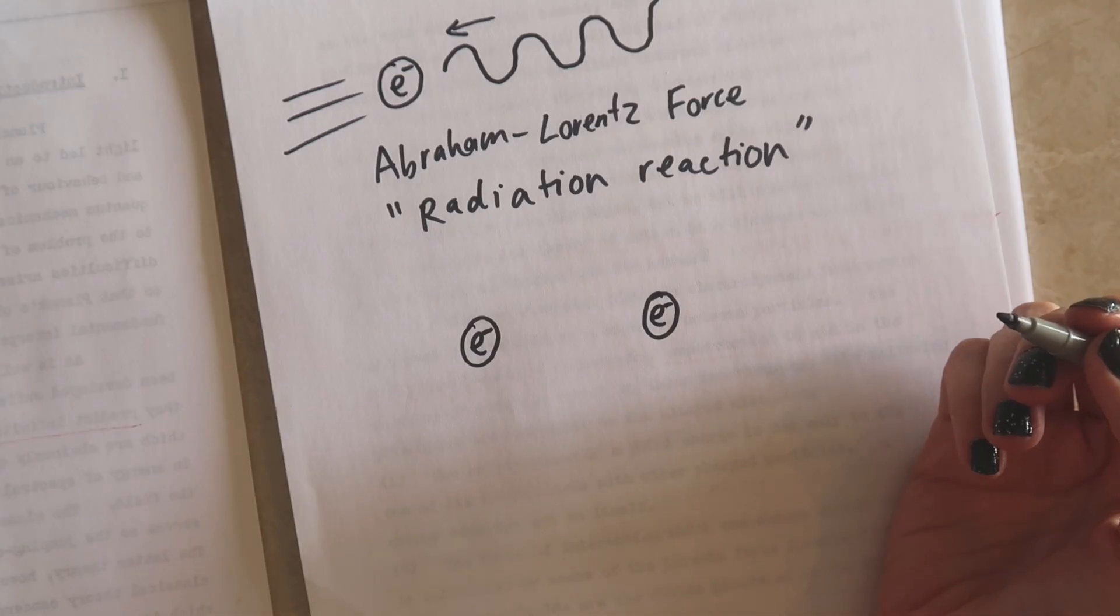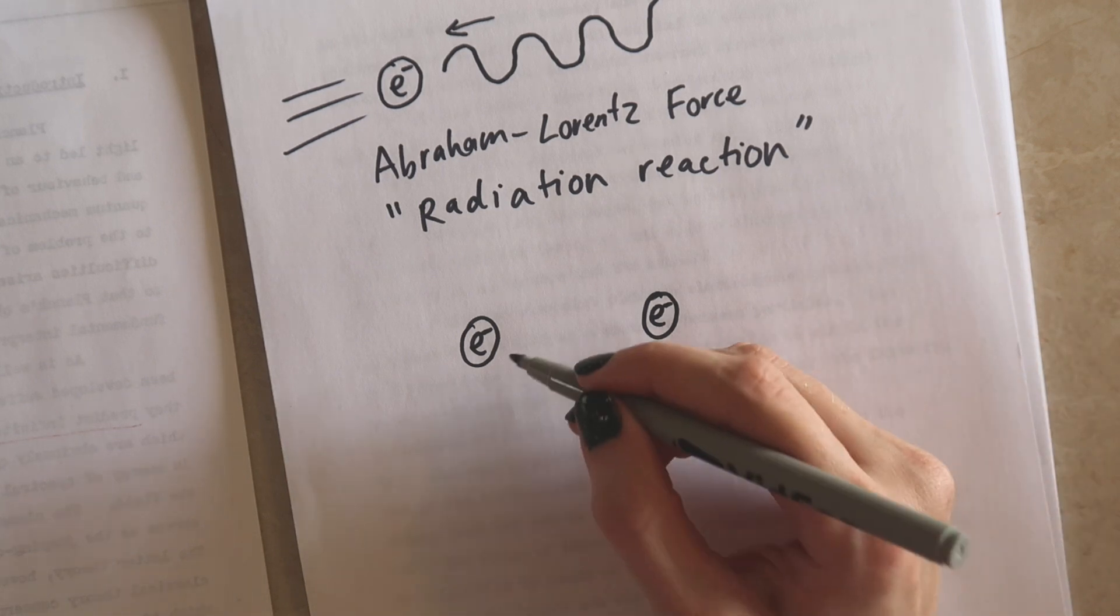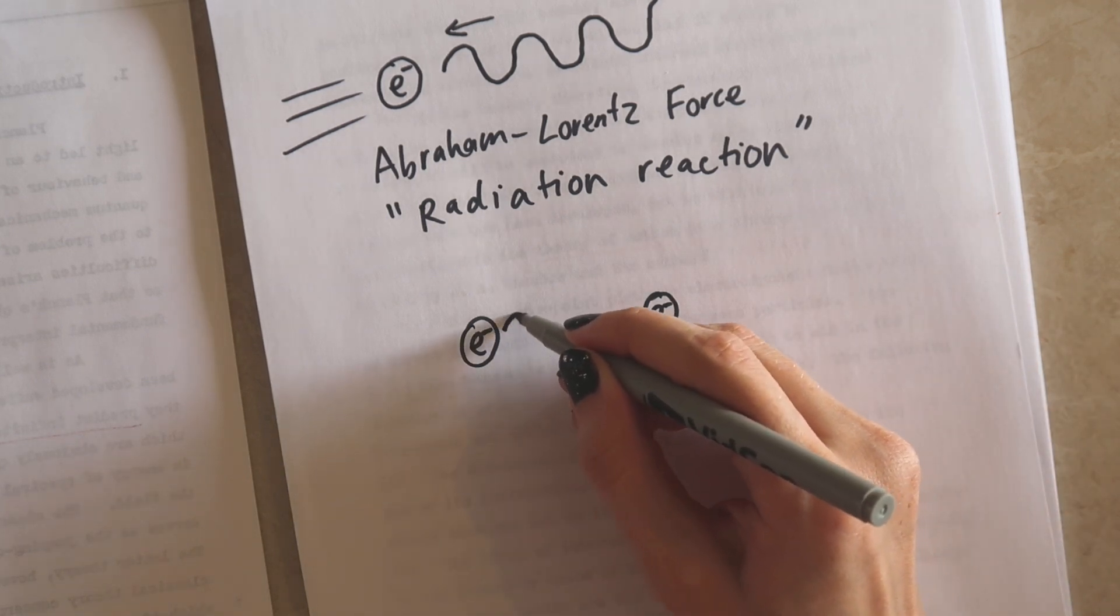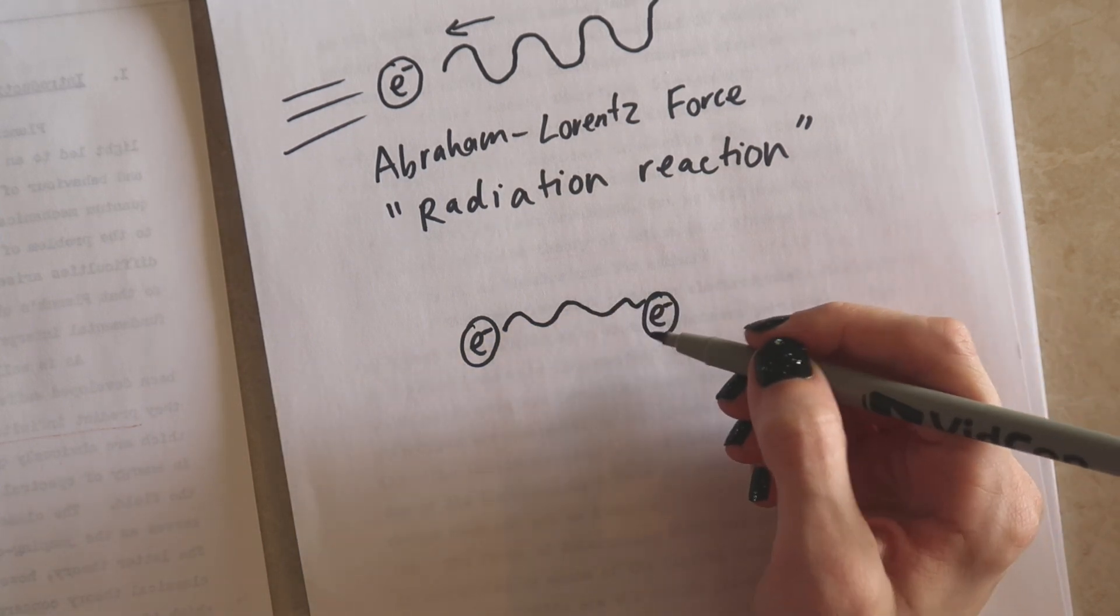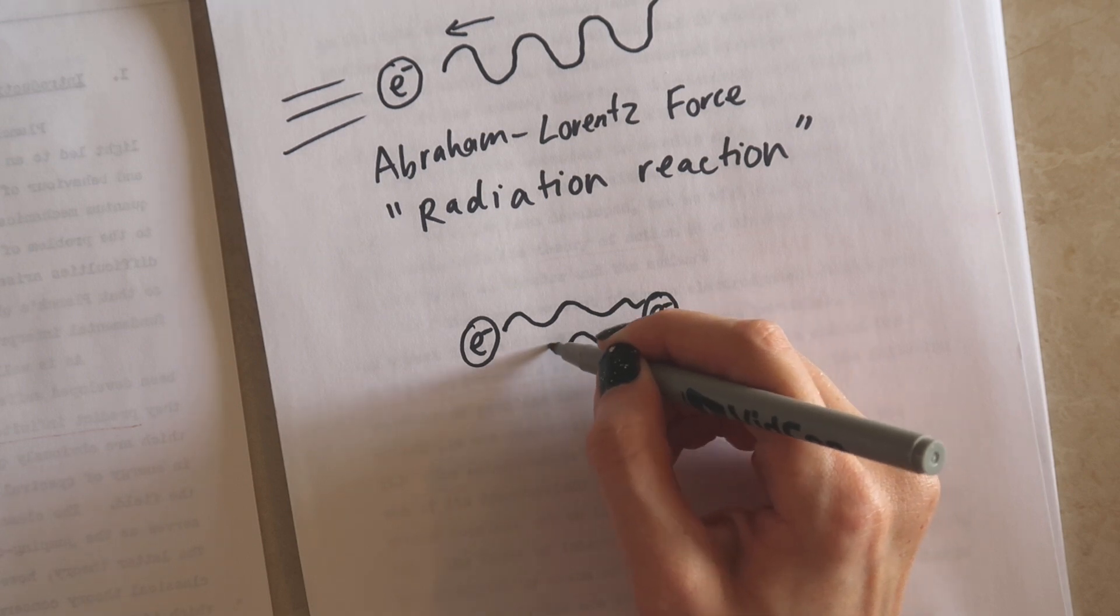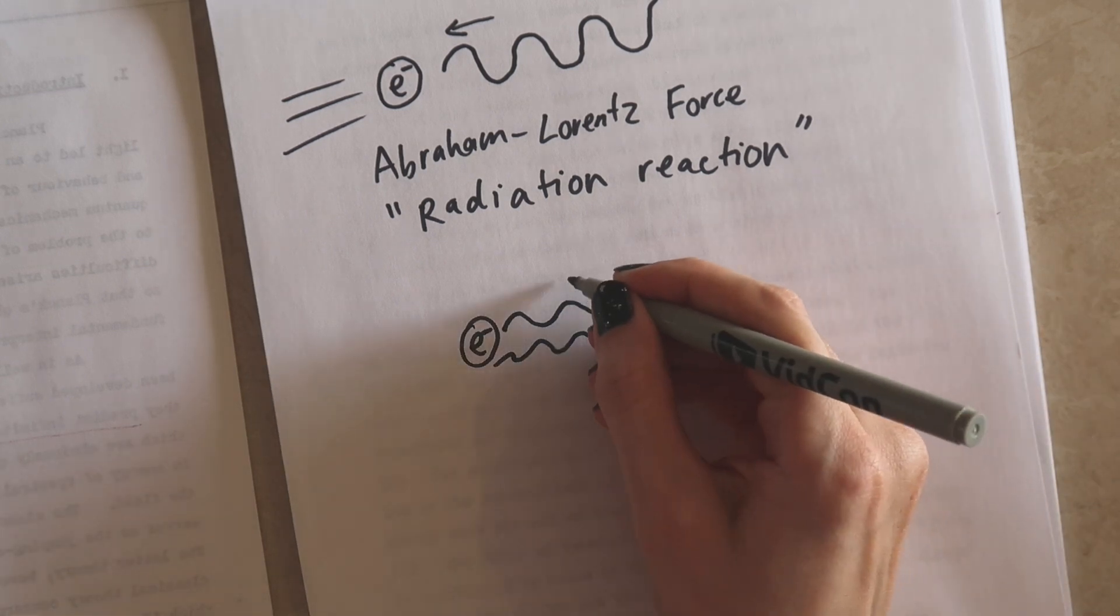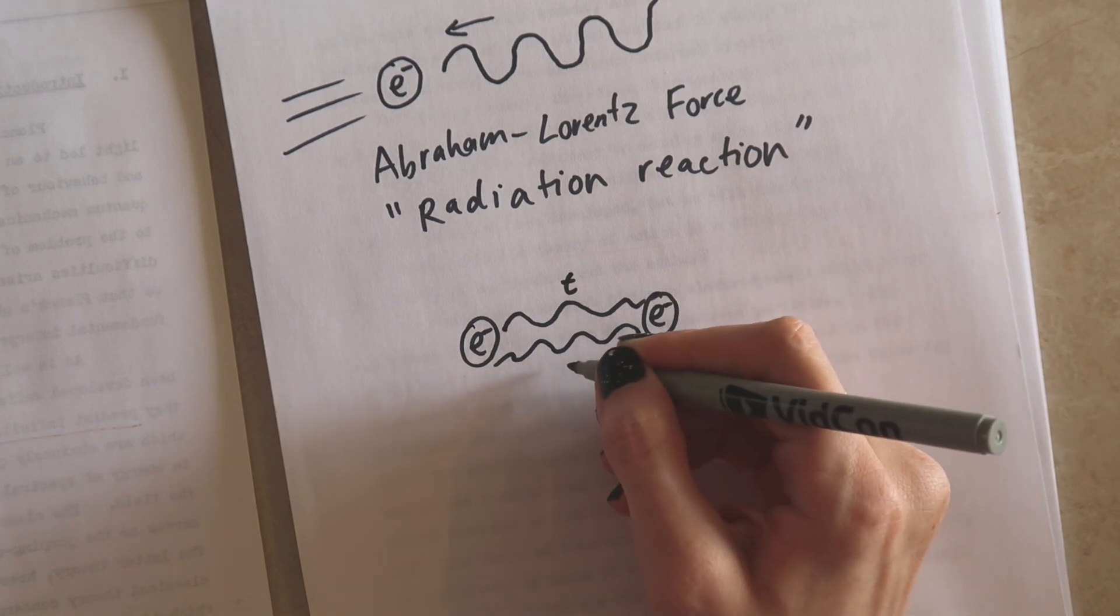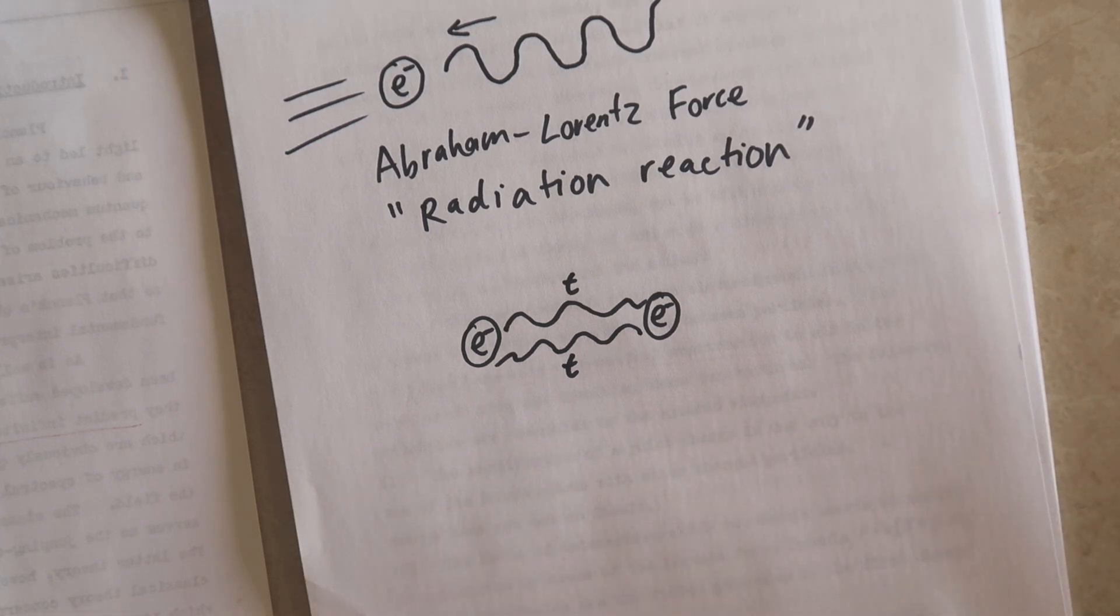So he considers two charges that interact in such a way that the second charge accelerated by absorbing the radiation emitted by the first charge then itself emits radiation that reacts back upon the first. But Feynman's supervisor pointed out that this could not explain radiation reaction because it would come with a time delay, the time required for light to pass between the two particles, whereas radiation reaction was instantaneous.